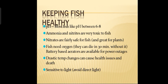Now, how do we keep the fish healthy? pH should be maintained — most fish like a pH between 6 to 8. Ammonia and nitrites are very toxic to fish, while nitrates are fairly safe. Fish need oxygen and can die in 30 minutes without it; battery-based aerators are available for power outages. Drastic temperature changes can cause health issues and death. Fish are also sensitive to light, so we must avoid direct light towards them.